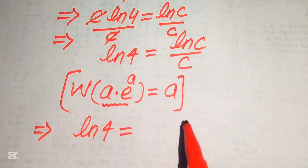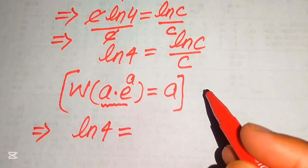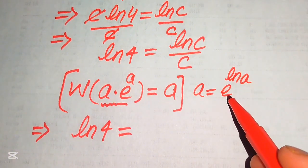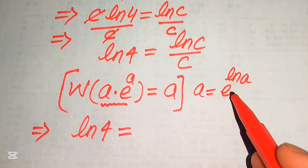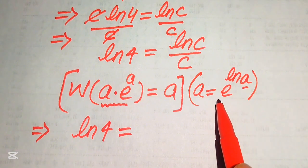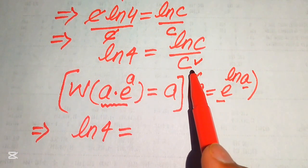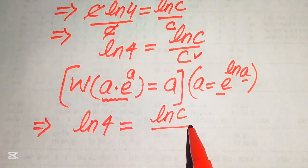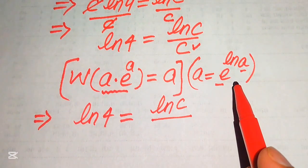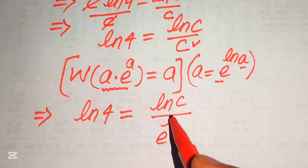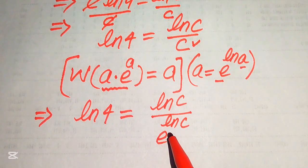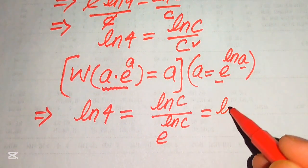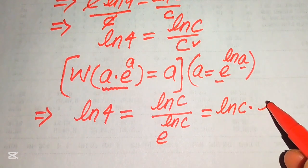We can use the property of log that a can be written as e to the power of log a, since e and log cancel out and we get a. So we rewrite the denominator c in this logarithmic form: the right hand side becomes log of c divided by e to the power of log of c. These cancel out and we again get c. We then write this as log of c multiplied by e to the power of minus log of c.